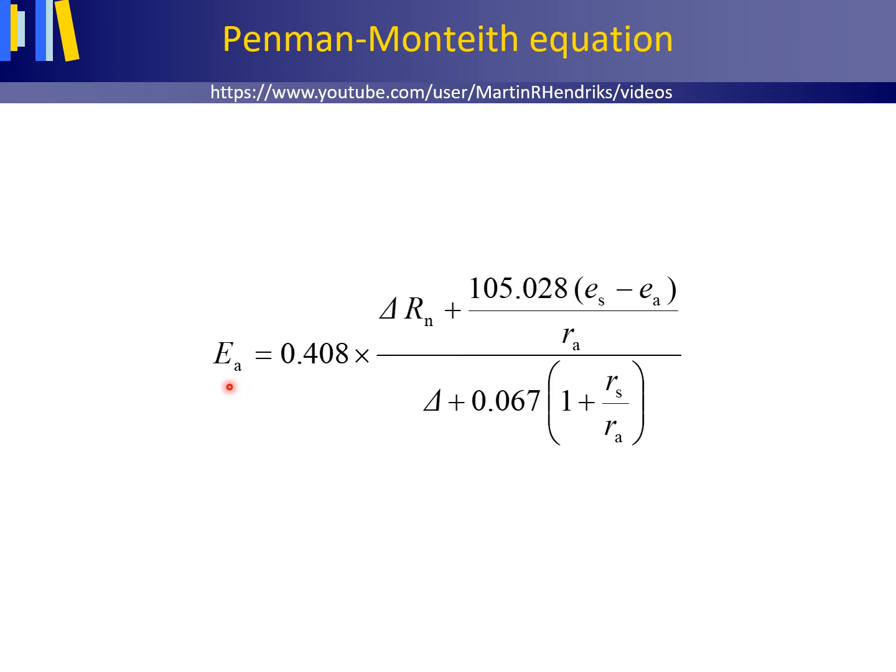EA is the actual evaporation in mm per day. Rn is the net radiation at the Earth's surface in MJ per square meter and per day. ES minus EA is the saturation deficit in kilopascal.